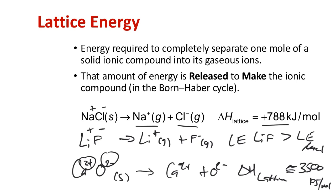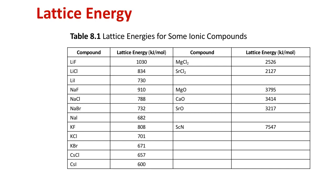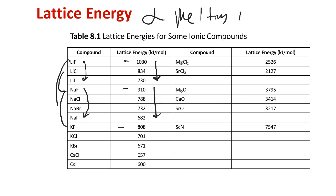Looking at a chart comparing lattice energies: as we go from LiF to LiCl to LiI, increasing the size of the halide ion causes a drop in lattice energy. Going from lithium fluoride to sodium fluoride to potassium fluoride, we drop from 1030 to 910 to 808 kJ per mole. Lattice energy is also generally proportional to the melting point of the compound — higher lattice energy means higher melting point.